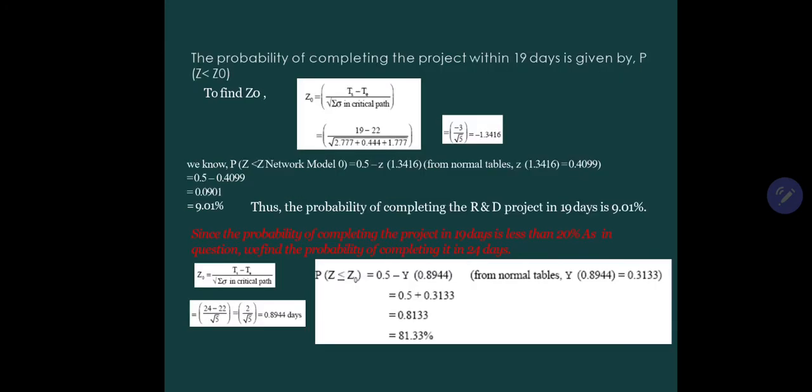It is a trial and error. Probability of completing the project within 19 days. Our critical path is 22 days, but if we want to complete it in 19 days, what is our probability? We can calculate by this formula: T minus TE divided by under root of summation of sigma in critical path. We have taken the critical path variances: 2.77, 0.44, 1.77. 19 minus 22 equals minus 3, divided by root 5, that is minus 1.3416. From the normal table, we calculate the value of Z of 1.346, which comes to 0.4099. We calculate 0.5 minus 0.4099, which comes to 9.01 percent.